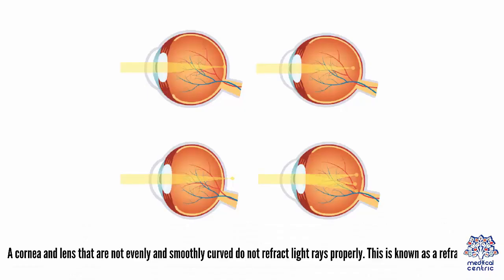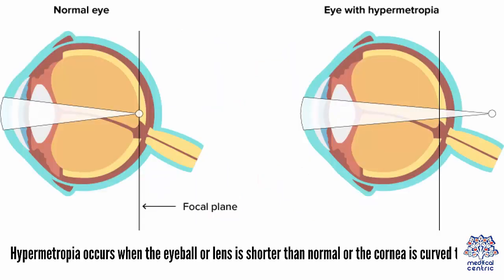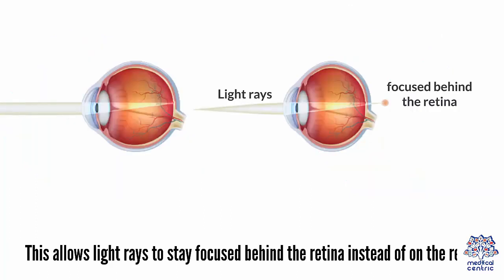A cornea and lens that are not evenly and smoothly curved do not refract light rays properly — this is known as a refractive error. Hypermetropia occurs when the eyeball or lens is shorter than normal or the cornea is curved too little, allowing light rays to stay focused behind the retina instead of on it.